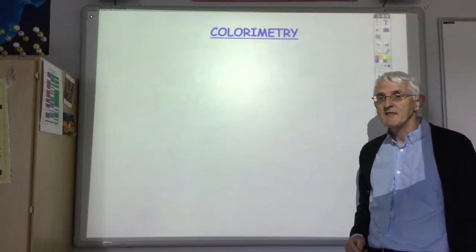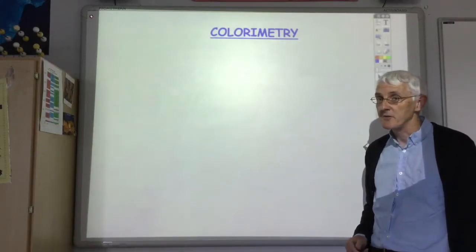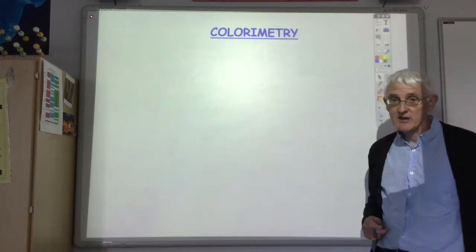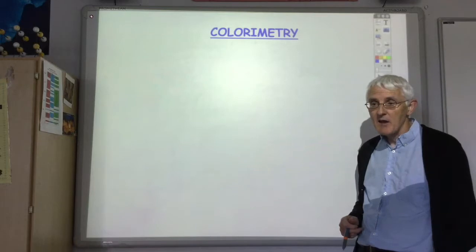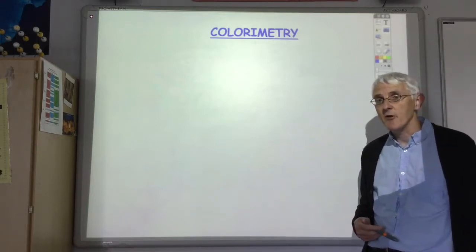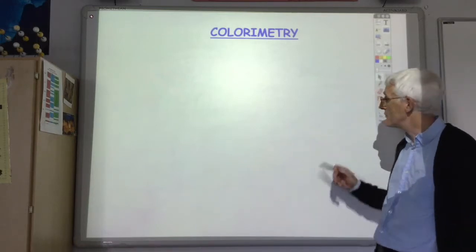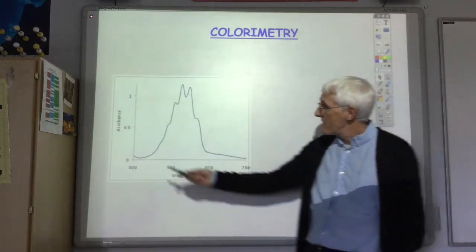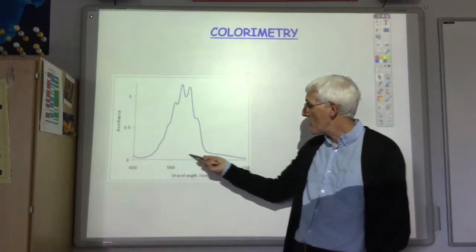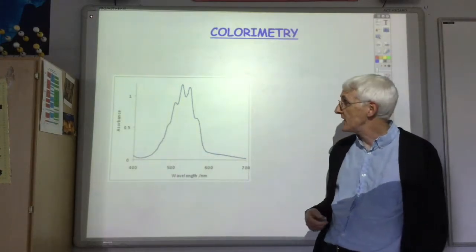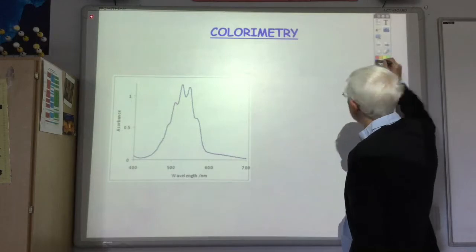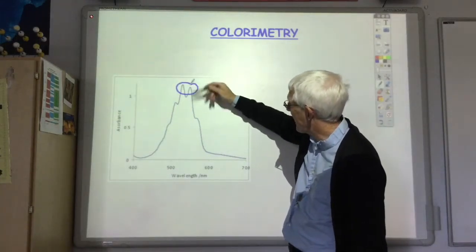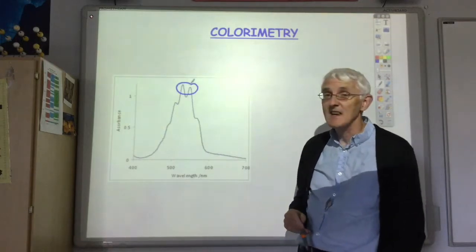I want to start by looking at visible absorption spectrometry, or as it's more simply known, colorimetry. I want to demonstrate it by looking at an example of a potassium permanganate sample. This graph shows where permanganate absorbs light, and we can see that the maximum absorbance is around 520 to 560 nanometers.